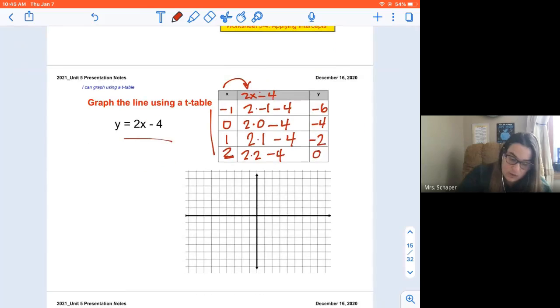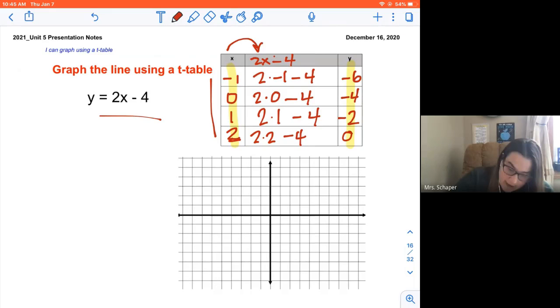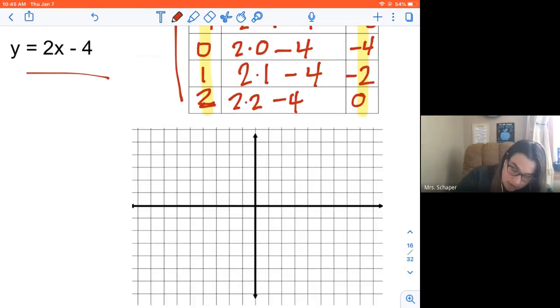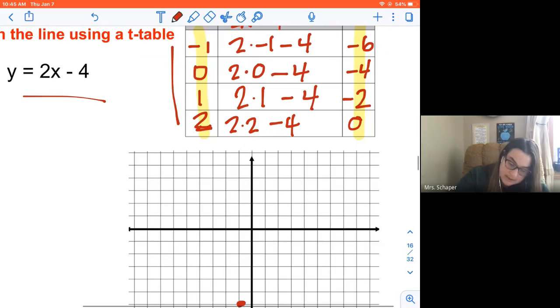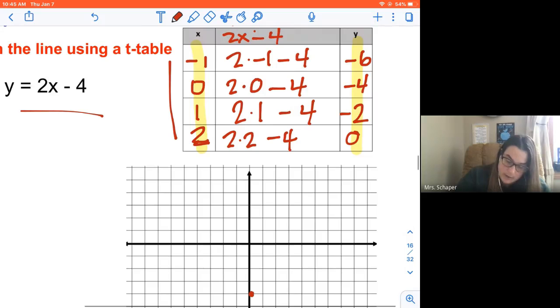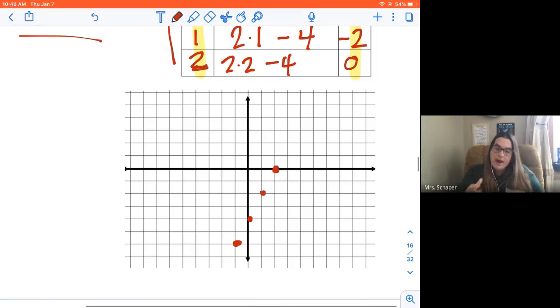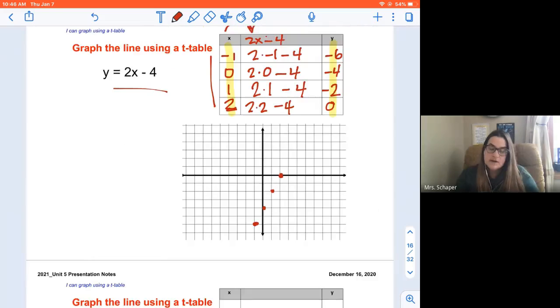Now what I do is I'm going to take each of my ordered pairs and I'm going to graph it. So -1, -6 means I'm going to go back 1, down 1, 2, 3, 4, 5, 6. 0, -4 means I'm going to go over 0, down 1, 2, 3, 4. X is 1, I'm going to go over 1, down 1, 2. And 2, 0 means I'm going to go over 2, down 0.